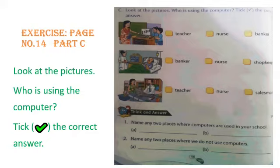Let's move to the second picture. Who is using a computer — a banker, a nurse, or a shopkeeper? Yes, a nurse is using a computer. Please put a tick on nurse. Now come to the third picture. Who is using a computer — a teacher, a nurse, or a salesman? Yes, a salesman is using a computer. Please put a tick on salesman.